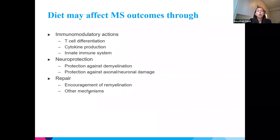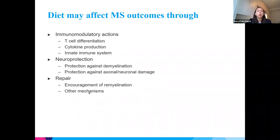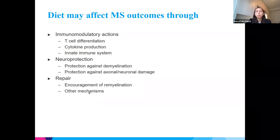How can diet affect MS outcomes? One is through immunomodulatory actions. Diet really has the ability to impact MS much the same way our disease-modifying therapies do. Certain dietary factors able to modulate the immune system through effects on T-cell differentiation, cytokine production, and innate immune system actions could be potentially helpful much like our DMTs. An even more interesting avenue is thinking about neuroprotection — if certain factors could help protect against demyelination or axonal and neuronal damage, and potentially encourage remyelination and repair.